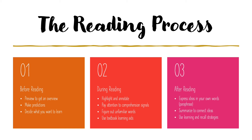During reading, you want to be highlighting and annotating — we'll get into annotating next week. Pay attention to comprehension signals and be aware of when your comprehension is breaking down and what is making you not understand something. Figure out unfamiliar words, and use textbook learning aids. If there are charts and graphs, be sure to pay attention to those because they will also help your understanding. After reading, express your ideas in your own words — if you can read something and then tell someone else what you read, that's a good sign you've understood it. Summarize what you read to connect ideas, and then use learning and recall strategies that work for you to help you remember what you read.